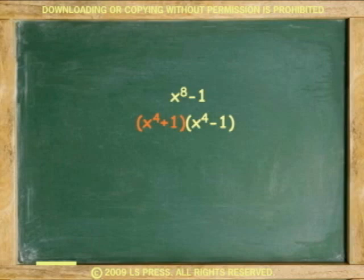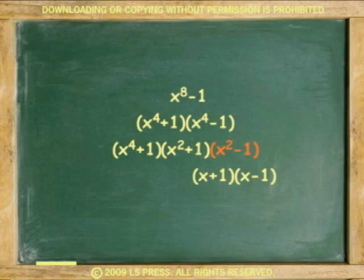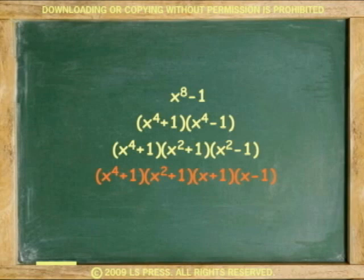Another example: factor x to the eighth minus 1. In the first round, the first binomial is a sum of two squares and cannot be factored, but we can factor the second binomial. In the second round, we factor x to the fourth minus 1 and get two more binomials — a sum that cannot be factored, but the second binomial can be factored again. In the third round, we factor x squared minus 1 and get two more binomials, ending the factoring with no more squares. The complete factors of x to the eighth minus 1 are x to the fourth plus 1 times x squared plus 1 times x plus 1 times x minus 1.